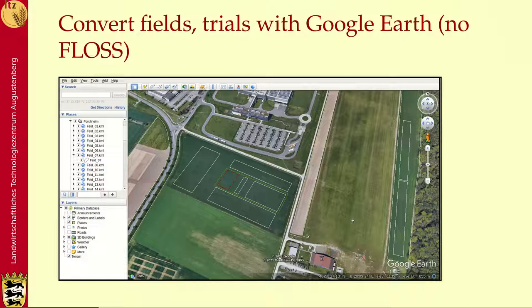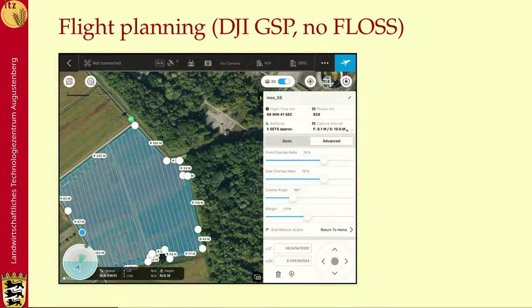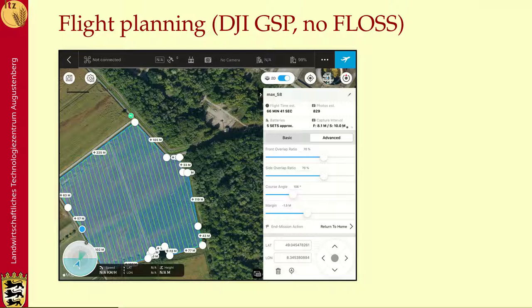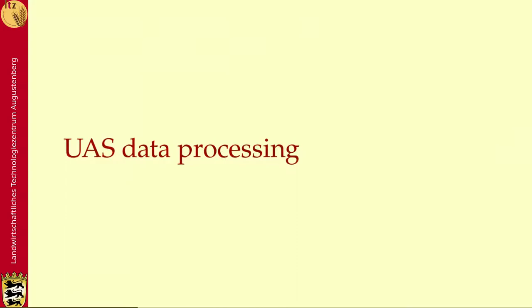In the beginning, we have to convert the field and trial geometries with Google Earth, which is unfortunately not free software. We create KML files and put them on the drone controllers. There we do the flight planning — here, for example, we see the DJI GS Pro software, which is also not free software, and here you can parameterize your flight and conduct the flight as well.